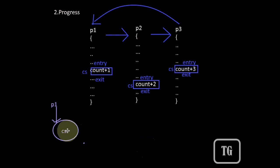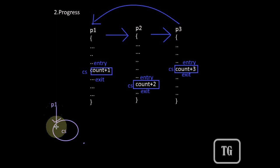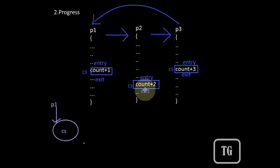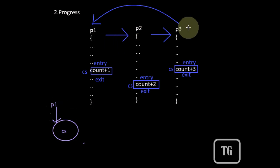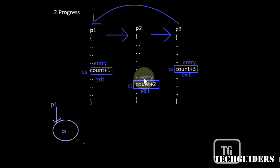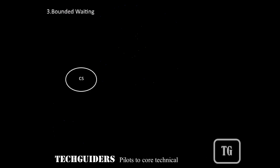This should not be allowed. If the critical section is free and some process wishes to enter it, then only those processes which are not in their reminder section should participate in the decision. Here, P1 is in its entry section and P2 is in the exit section — they are not in their reminder section, so P1 and P2 can participate. But P3, who is executing in the reminder section, should not participate in this decision. This is called progress, and the solution to the critical section problem must satisfy this condition.